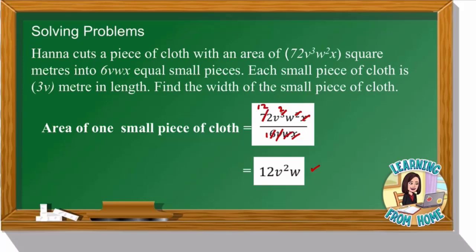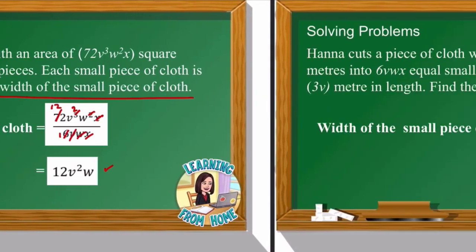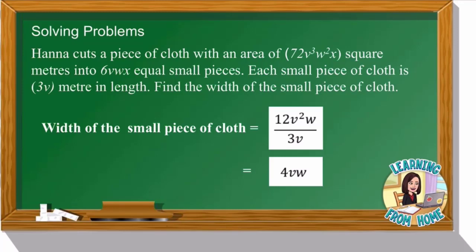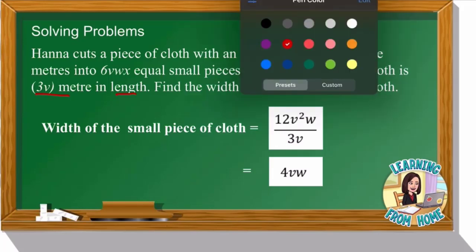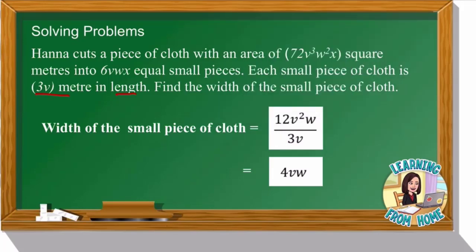Now we find the width of the small piece of cloth. Width = area ÷ length = 12v²w ÷ 3v. We simplify: 12 ÷ 3 = 4, and v² ÷ v = v, while w remains. So the width of the small piece of cloth is 4vw meters.